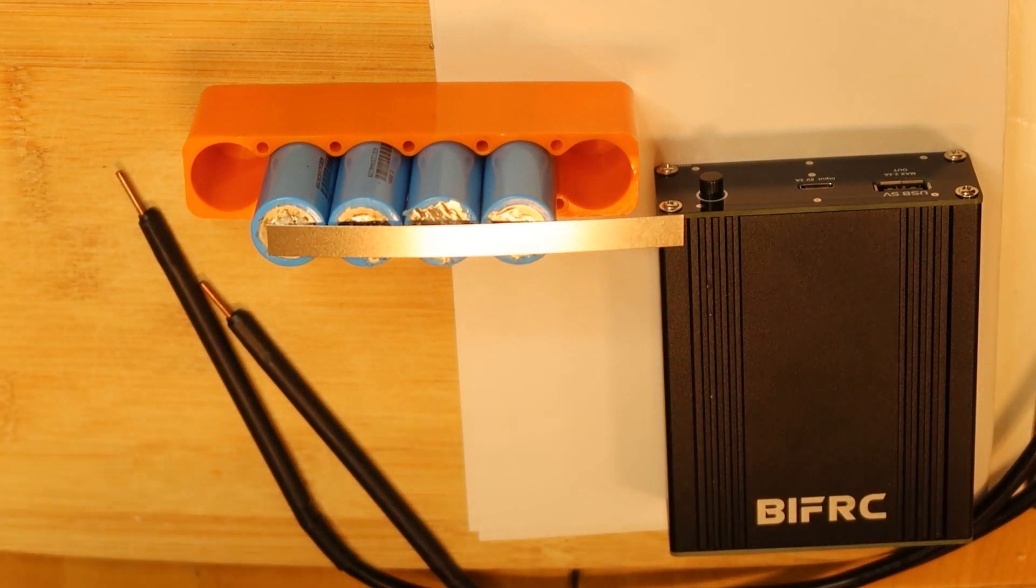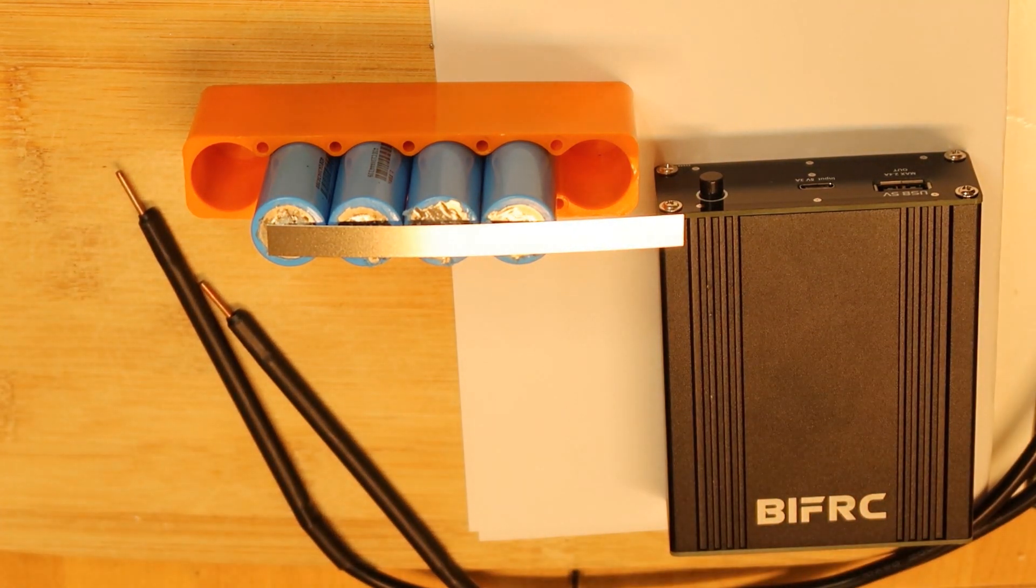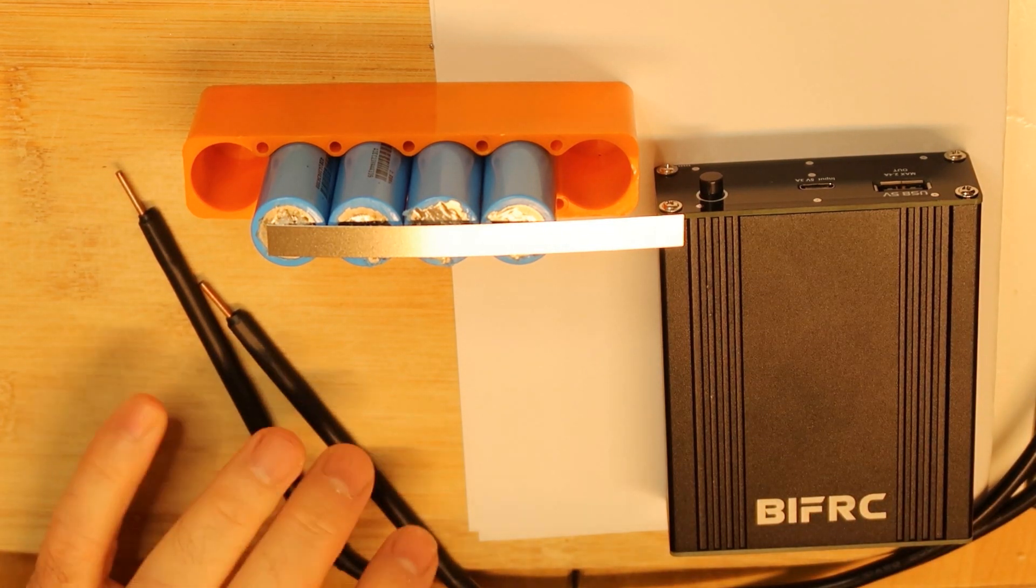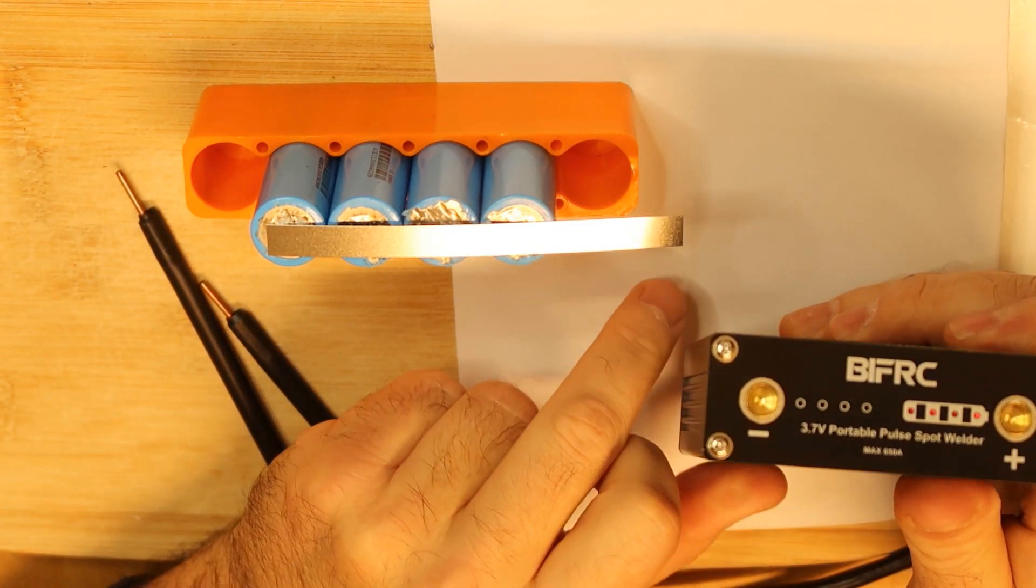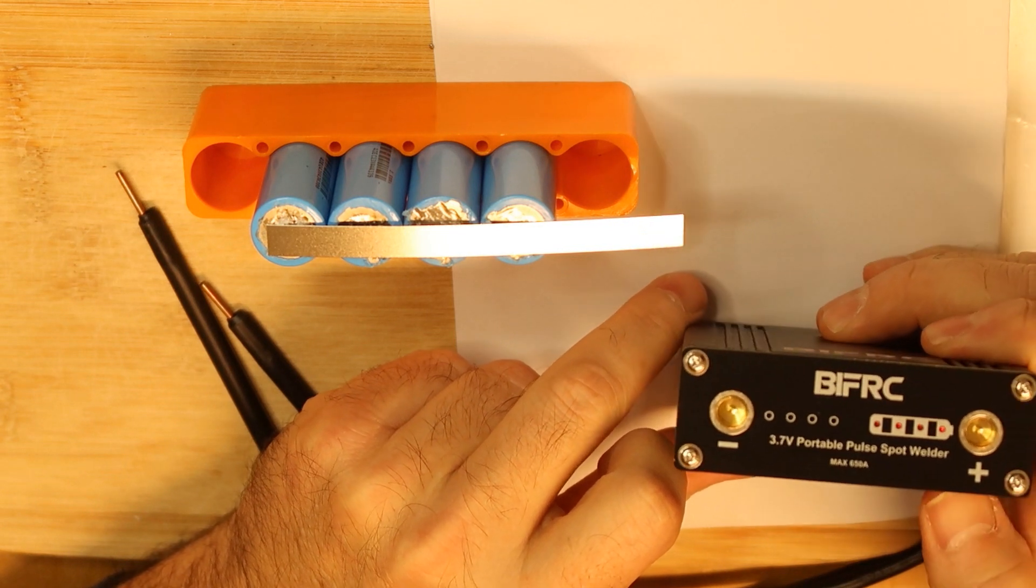Hi, I've got several requests to check how many pulses you can put out with the BIFRC spot welder. So of course I fully charged it so it will be completely full of charge, as you can see, four levels.